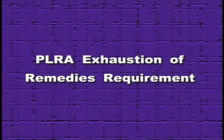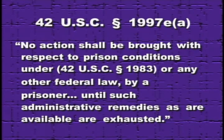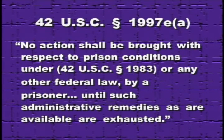To meet that first purpose, Congress erected a number of hurdles that prisoners must cross over before the court will get to the stage of processing motions to dismiss, summary judgment, etc. The first hurdle is an exhaustion requirement found in 42 U.S.C. Section 1997e(a), which says that no action shall be brought under Section 1983 or any other federal law by a prisoner until such administrative remedies as are available have been exhausted.